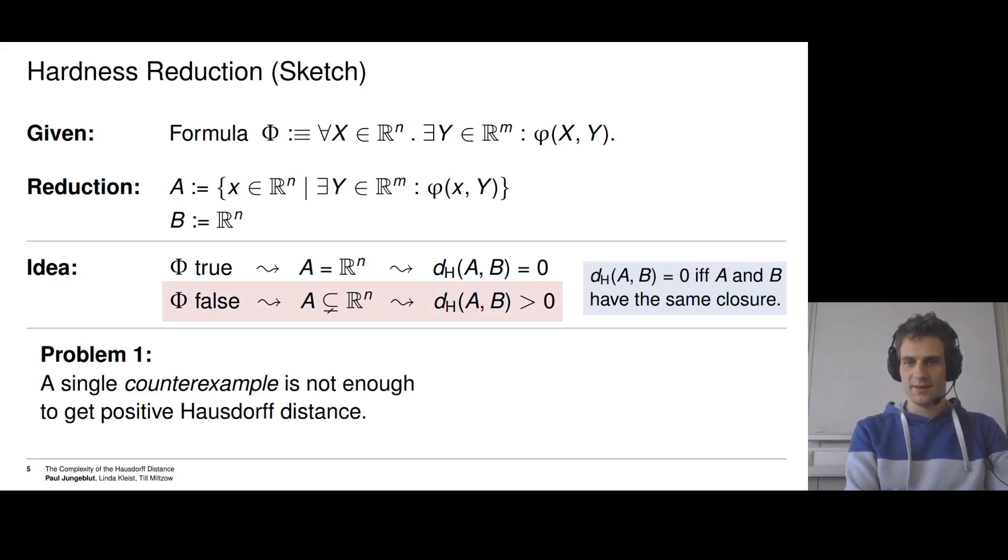The first problem is about correctness. Two sets A and B have Hausdorff distance 0 if and only if they have the same closure. They don't need to be the same, they only need to have the same closure. So if we have a formula for which there is only a single x, for example, for which there is no y, then A and B are not the same, but they have the same closure. And in this case, they have Hausdorff distance 0 even though we started with a no instance. So a single counterexample is not enough to get positive Hausdorff distance.